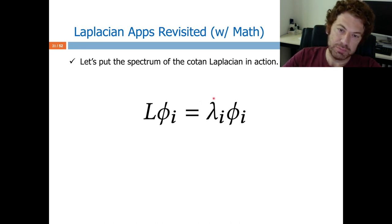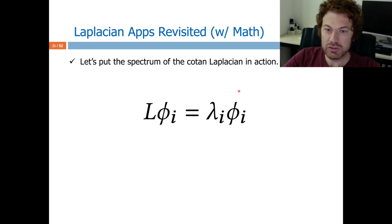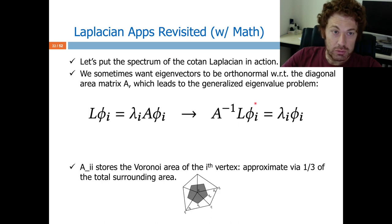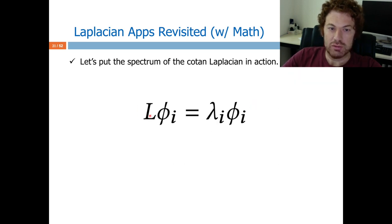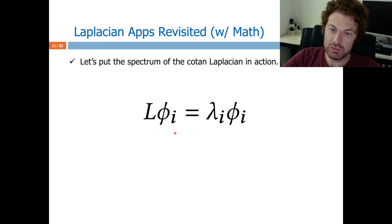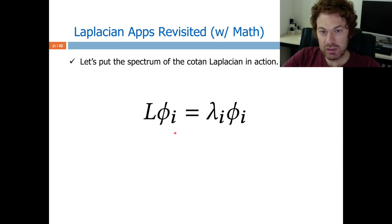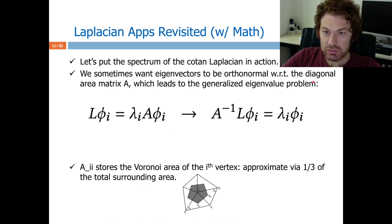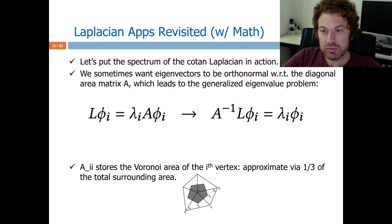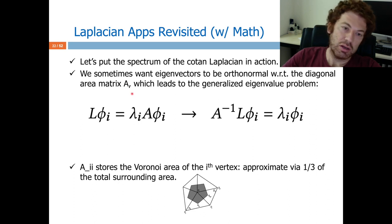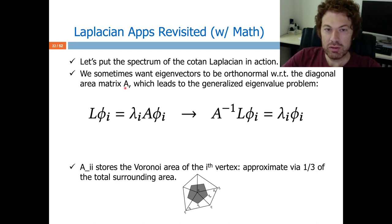This is the eigenvalue. An eigenvector just changes the scale, not the direction. Since L is symmetric positive definite, these eigenvectors will be orthonormal to each other, so they can define a nice basis for my space. Sometimes we also want the eigenvectors to be orthonormal with respect to the area matrix, giving more geometry-aware eigenvectors and eigenbasis — hence it is more preferable.